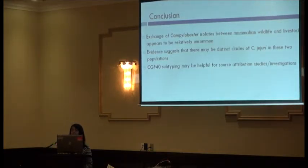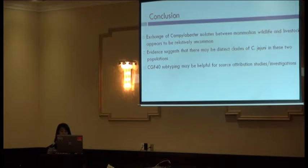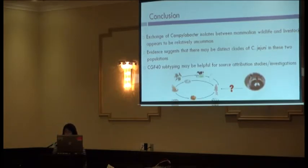Based on evidence from our molecular subtyping, antibiograms, and comparison of prevalence, we found that Campylobacter isolates were minimally exchanged between wildlife and livestock on southern Ontario farms. Evidence suggests there may be distinct clades of C. jejuni in wildlife and livestock populations. CGF40 may be helpful for source attribution studies in the future to assess whether wildlife are a direct source for Campylobacter species to humans.